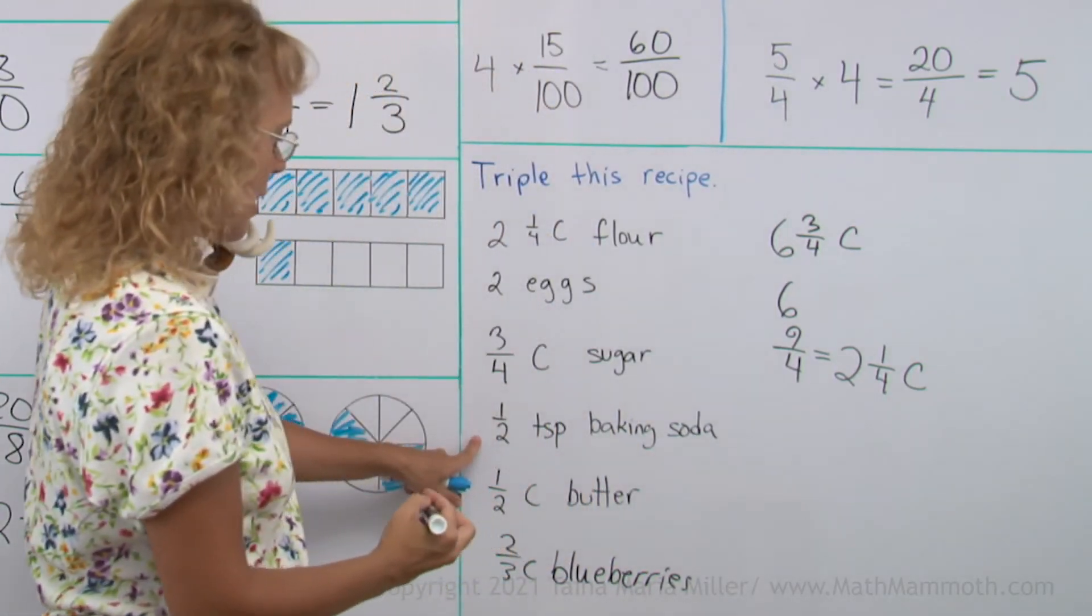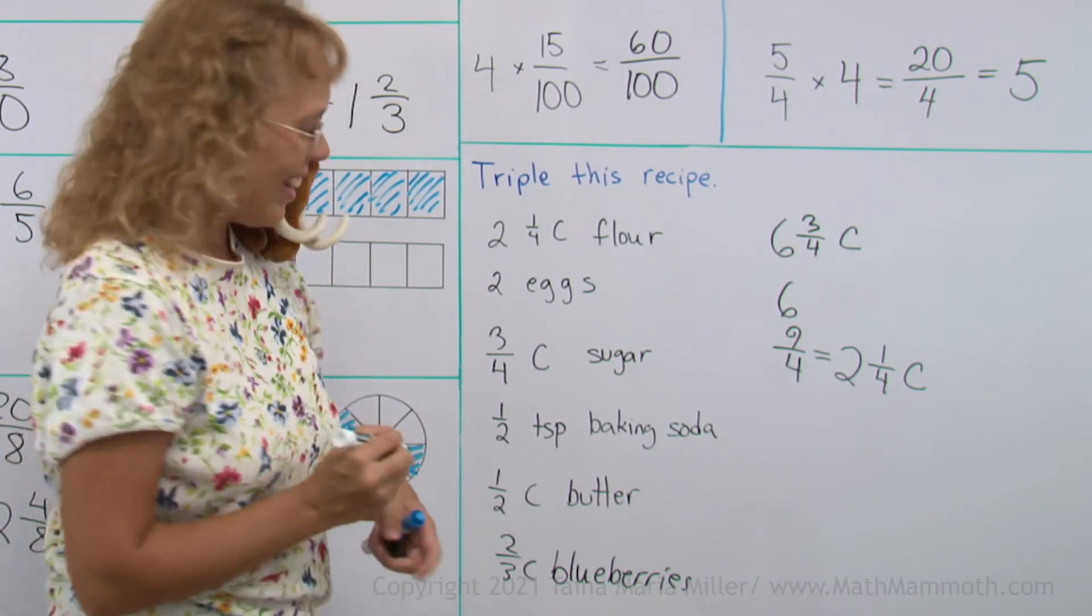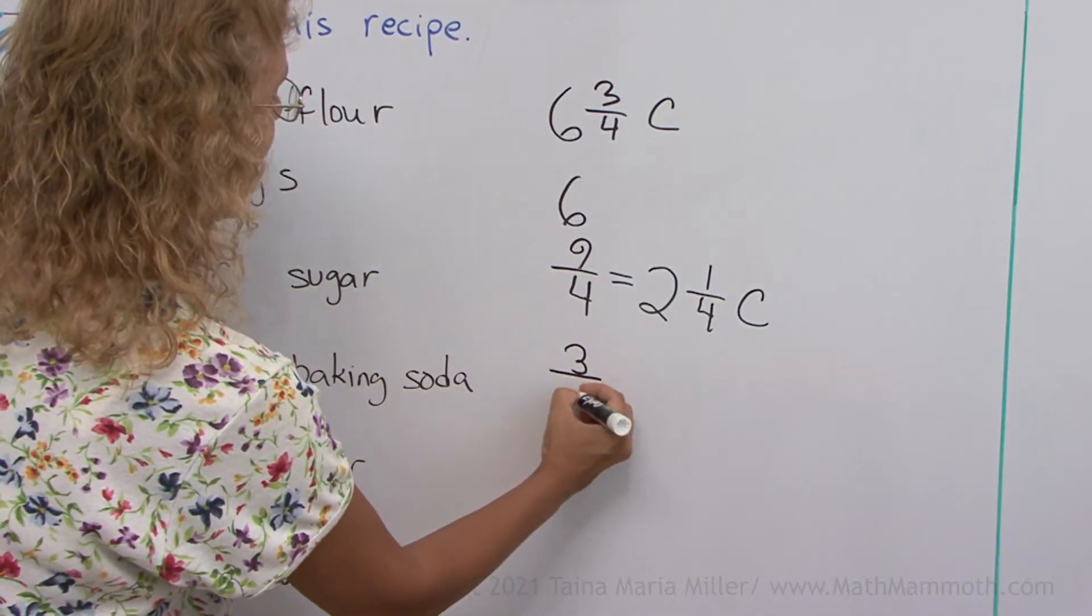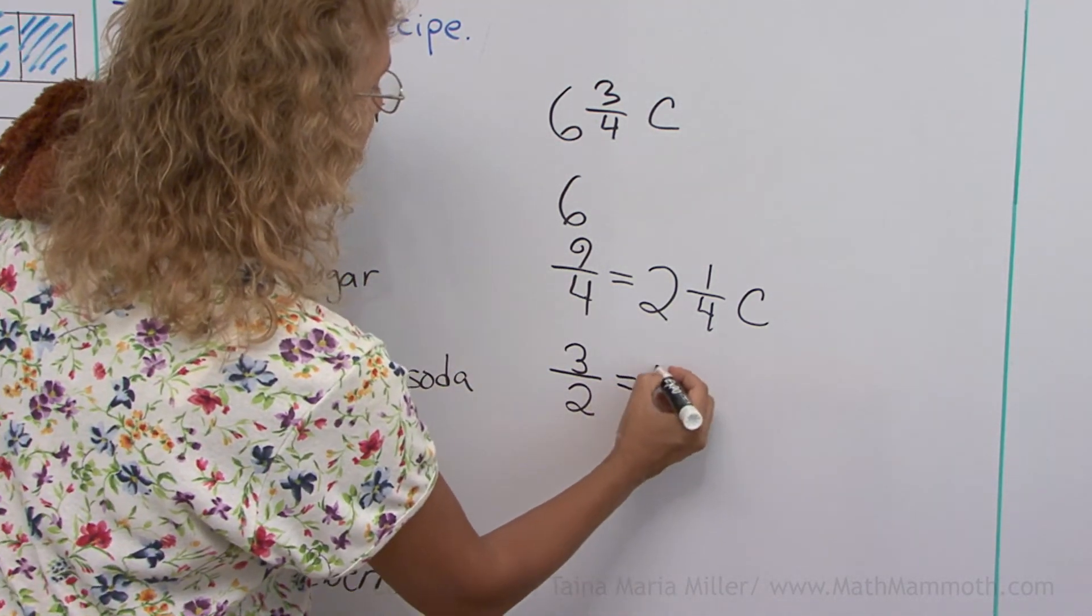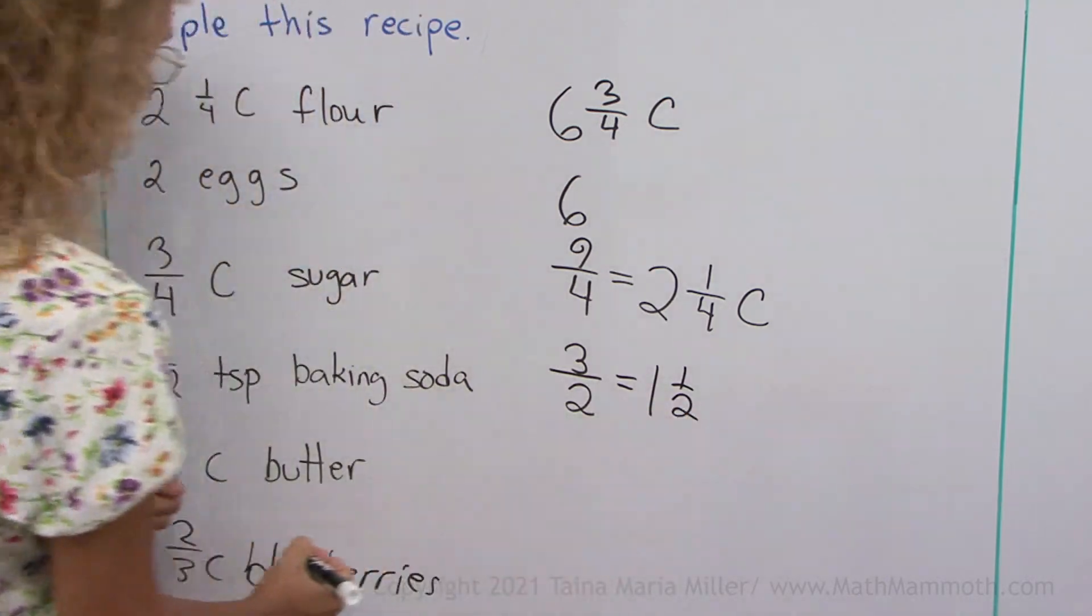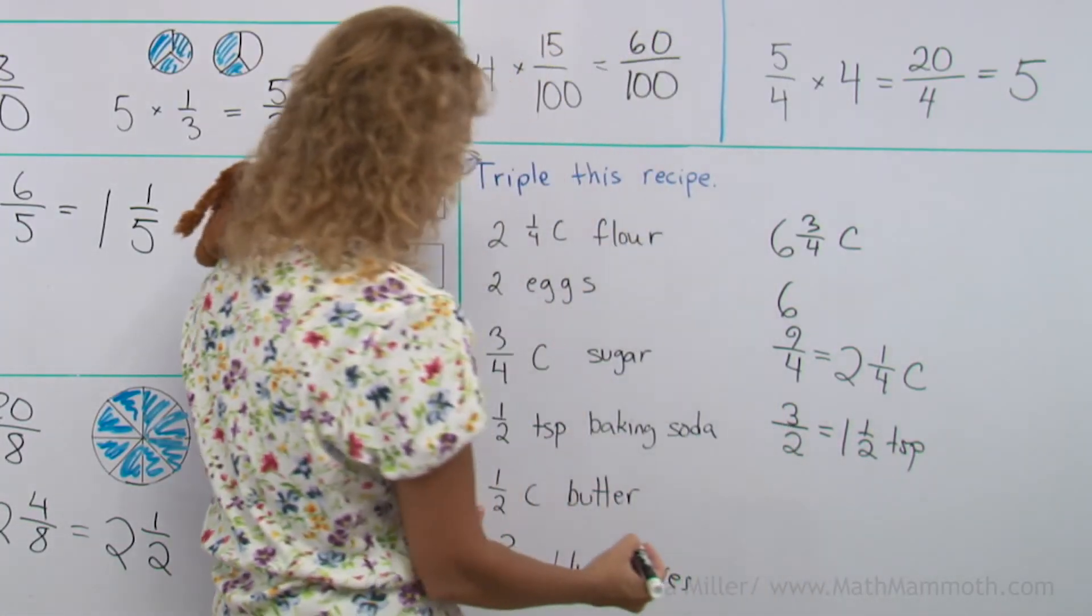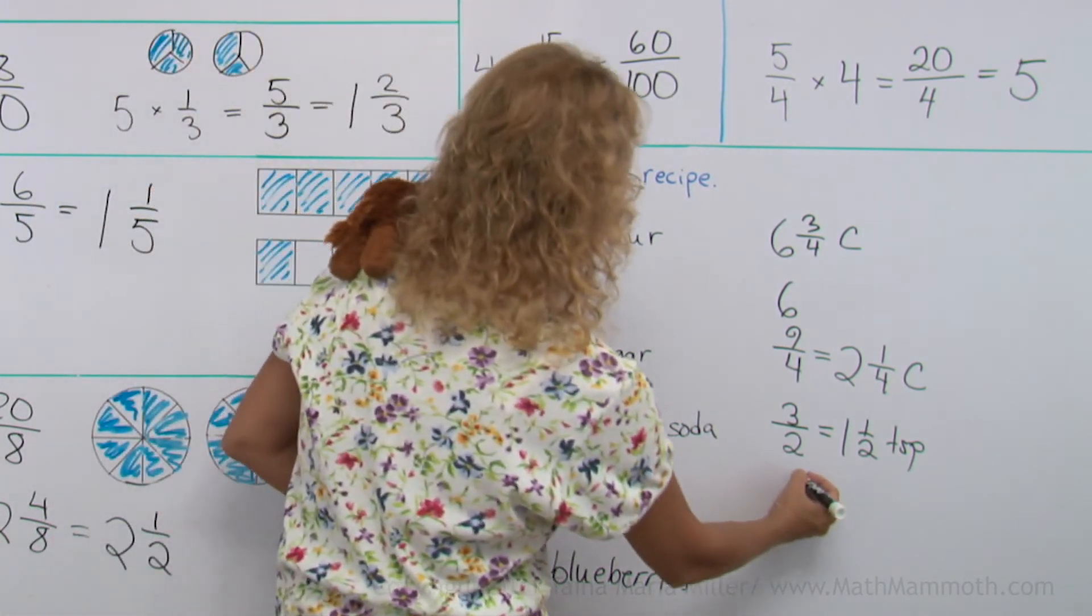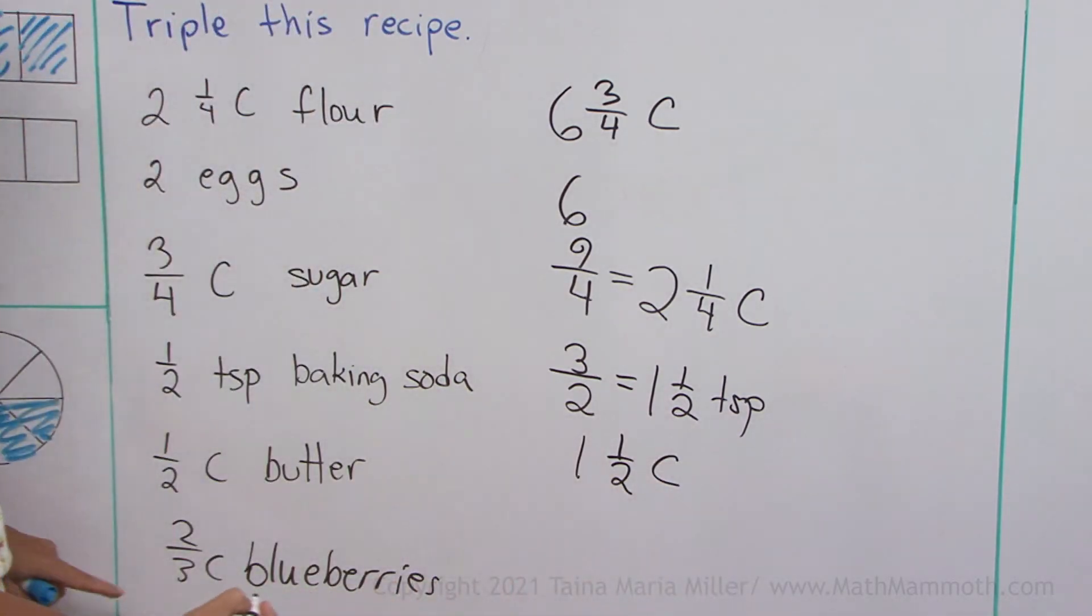Half a teaspoon of baking soda times 3. Okay. Half times 3 would be 3 halves. But again, we need to write it as a mixed number. So let's write it as 1 and 1 half. And that's teaspoons. And then half a cup of butter. Okay. It's gonna be the same thing here. 1 and 1 half, right? But cups. Cups of butter.